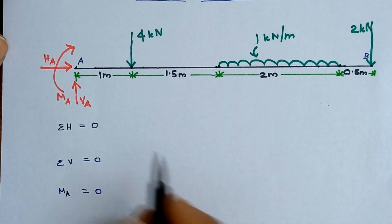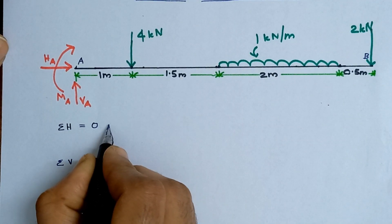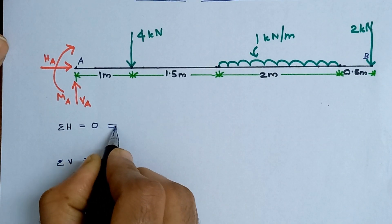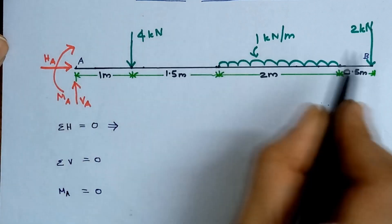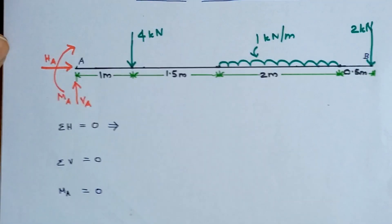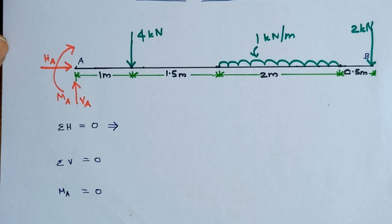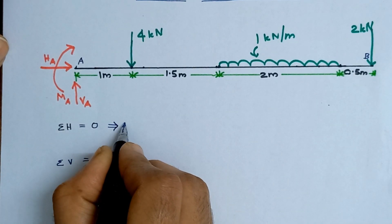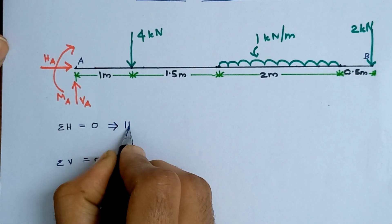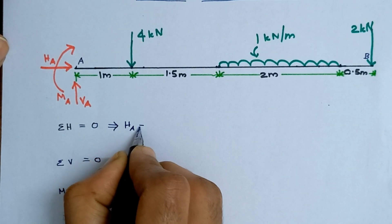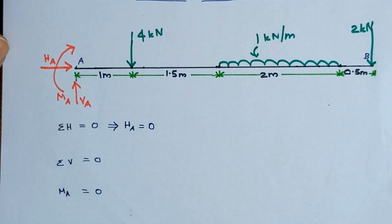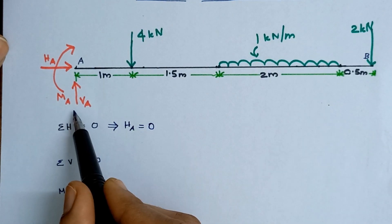Coming to the first condition, sigma H = 0. There is only one horizontal reaction acting on this beam, so that will be equal to 0. We can say HA = 0.